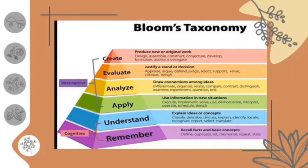For example, it's Bloom's Taxonomy. The cognitive here is the Remember and Understand levels, wherein students recall facts and basic concepts, define the lesson, and understand explained ideas or concepts. And the meta-cognitive here is the Apply, Analyze, and Evaluate levels, wherein they produce a new concept or justify a decision in a certain topic. With meta-cognitive, they can draw conclusions or use the information they learned in a new situation — it is like applying what you have learned.